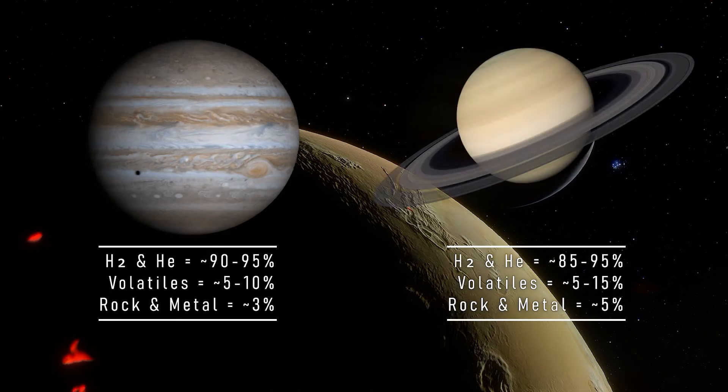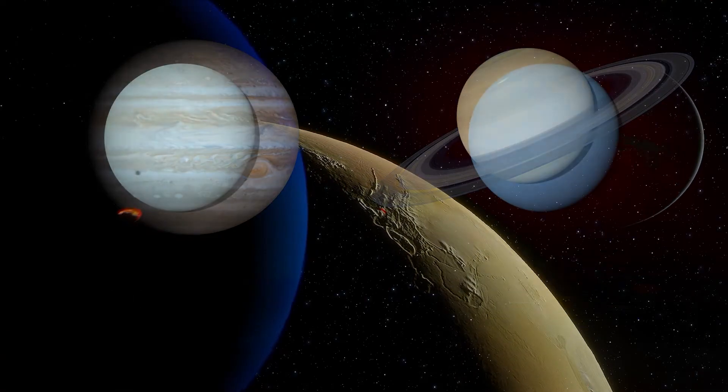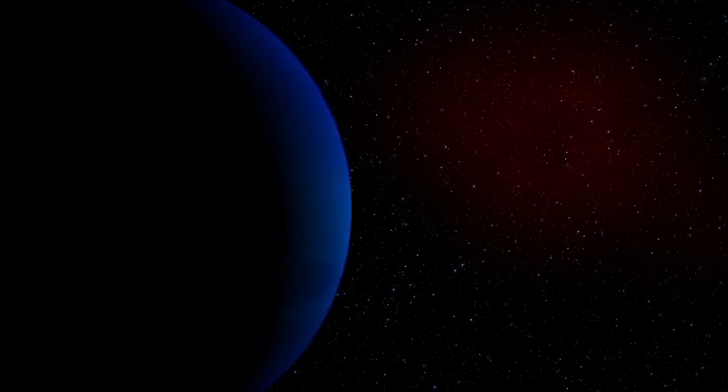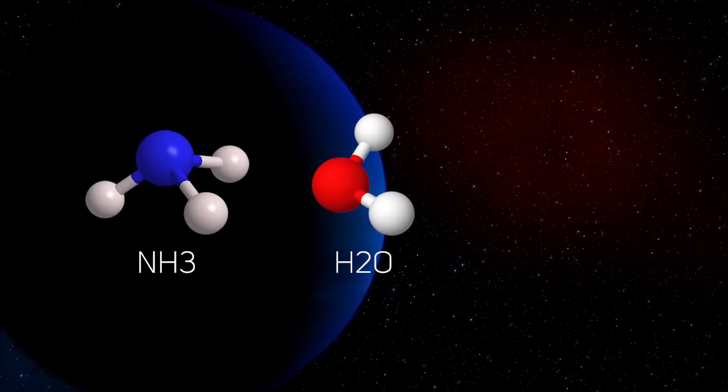While Jupiter and Saturn are composed of over 95% hydrogen and helium, Uranus and Neptune are only around 20% hydrogen and helium by mass, the other 80% being mainly volatiles such as ammonia, water and methane.